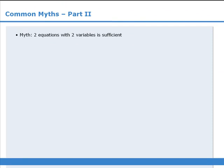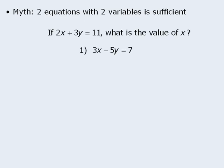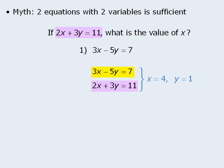The next myth to discuss is that two equations with two variables will always provide sufficient information to determine the individual values of x and y. Sometimes this rule works. For example, in this question we want to find the value of x. We are given one equation with two variables, and statement 1 provides a second equation with two variables. With these two equations, we can use one of several methods to solve for x and y. So in this case, having two equations with two variables does provide sufficient information. However, this is not always the case.